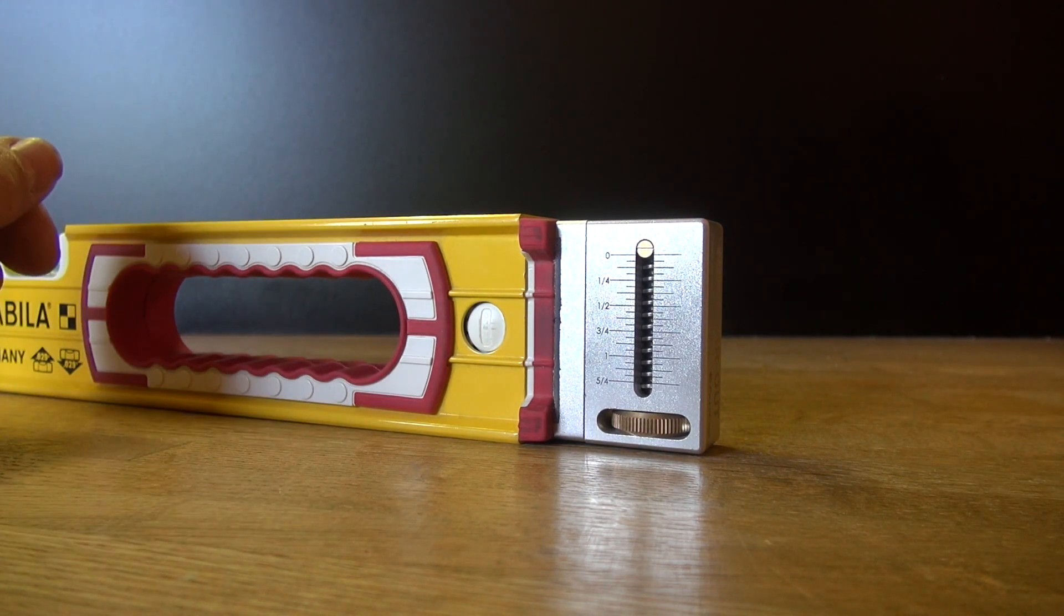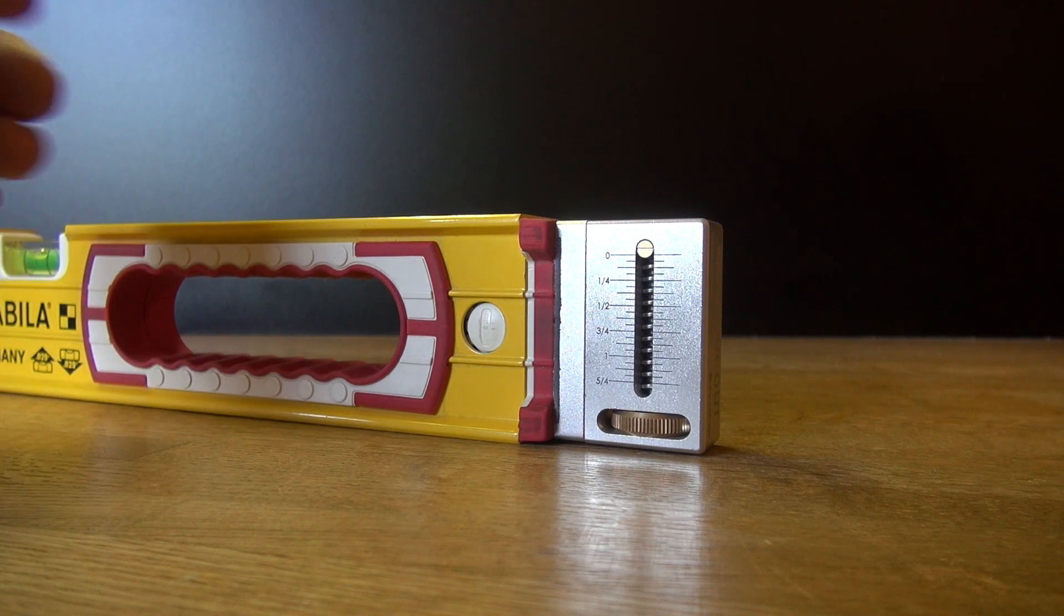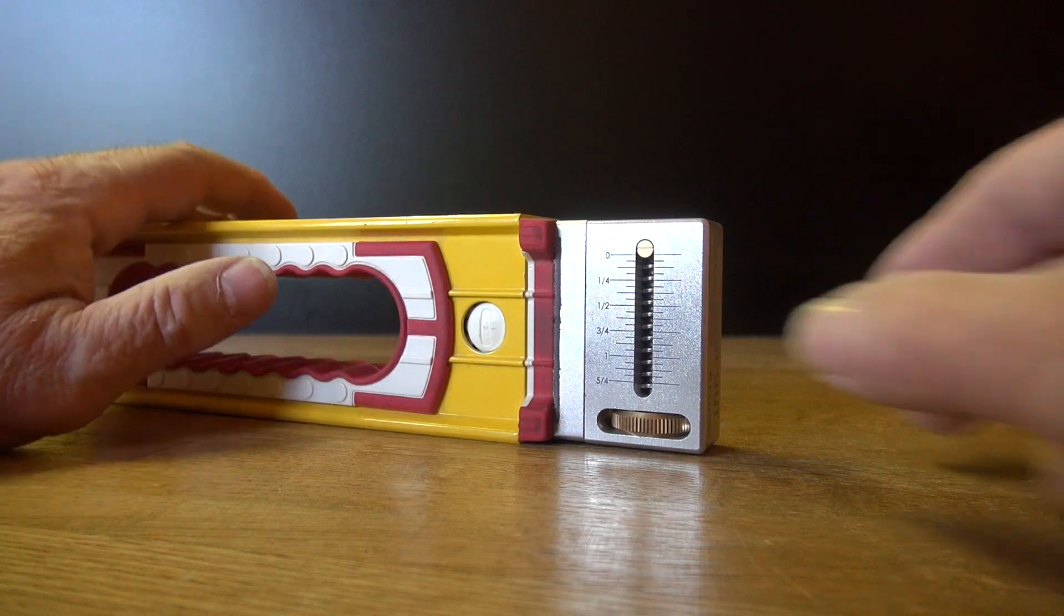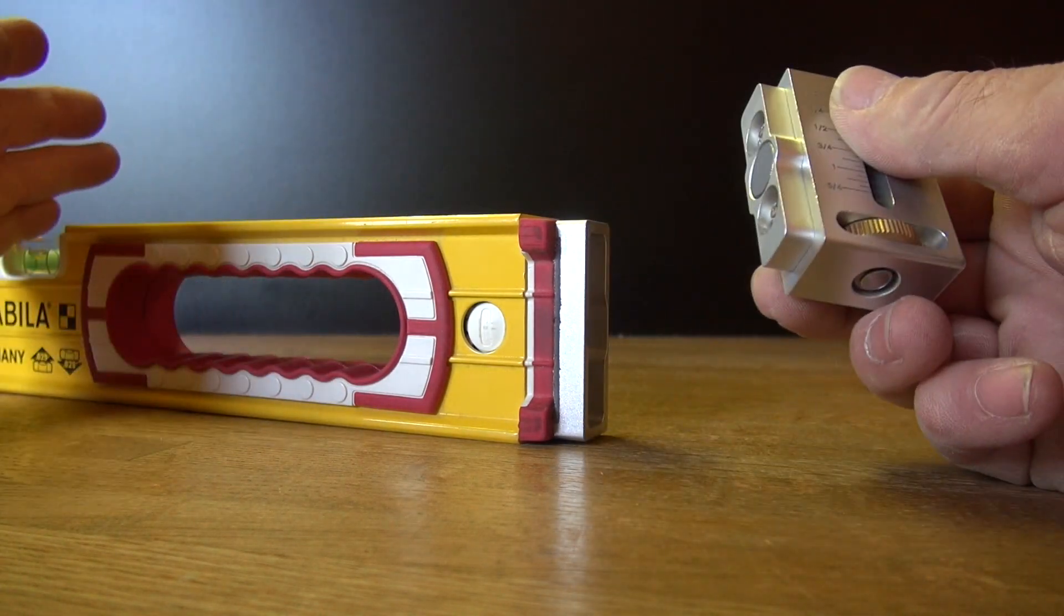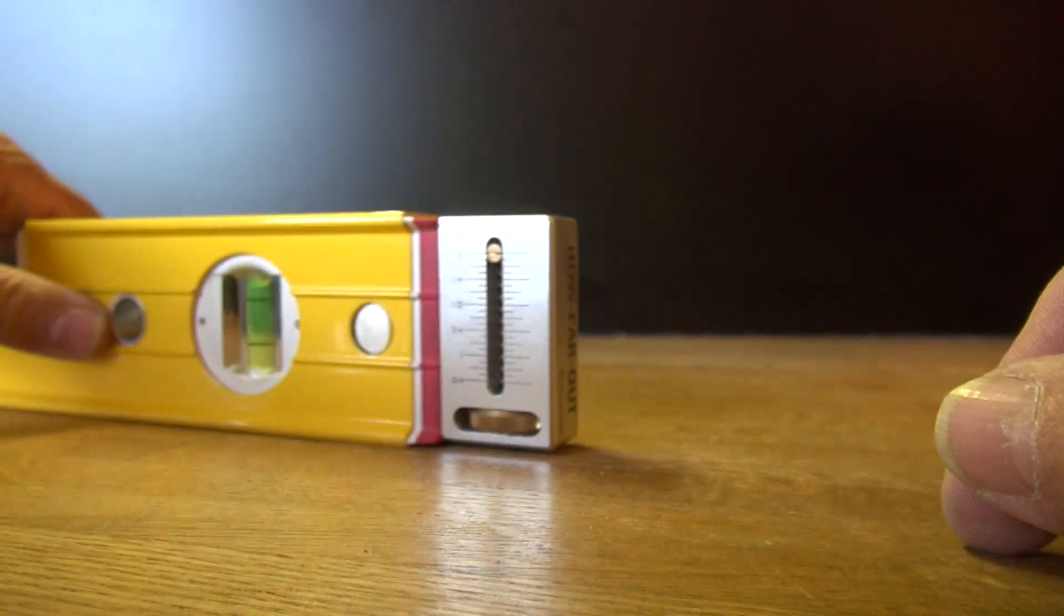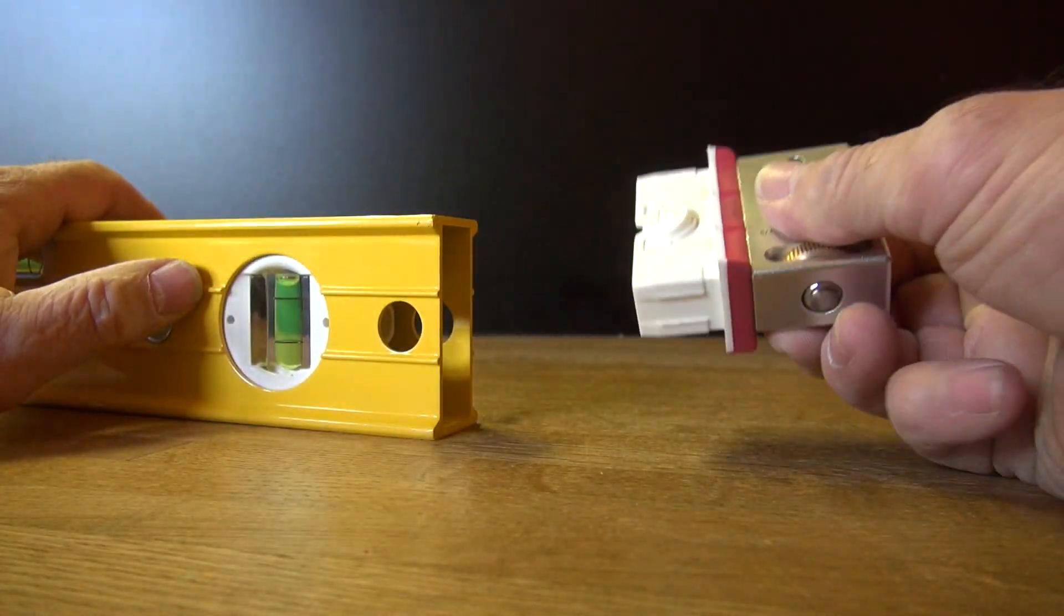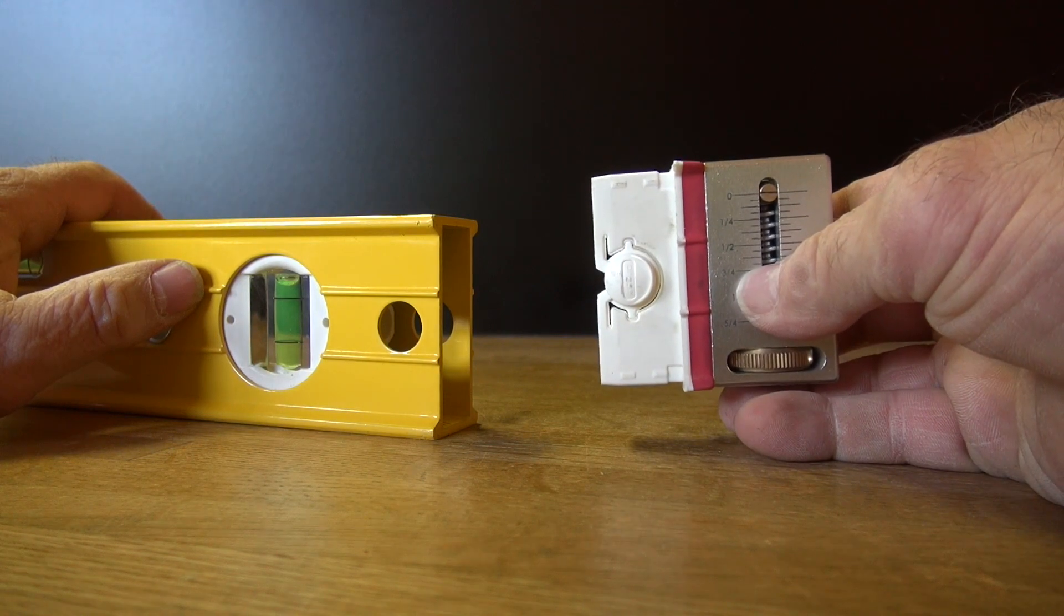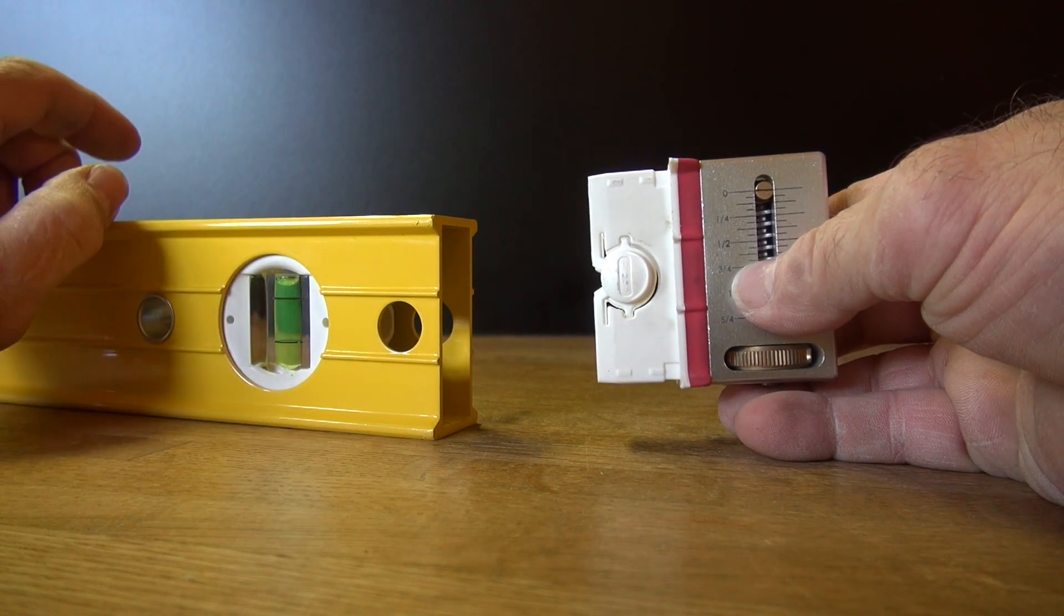If you want to use this on your Stabila, your Fat Max, your Irwin, whatever, you can use the magnetic quick coupler. Everything's the same, but there's a hack for Stabila 96. Think about it: the removable end cap itself can take the place of our magnetic quick coupler.